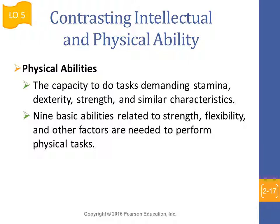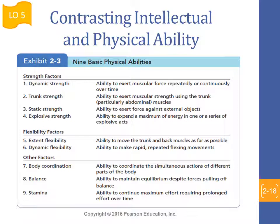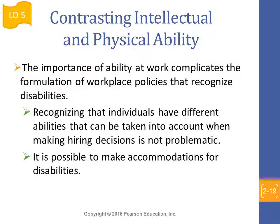When we talk about physical abilities, we are looking into physical attributes: strength, stamina, and flexibility of the human body, which are very important for certain tasks. Exhibit 2.3 in the book talks about the different strength factors and flexibility factors — dynamic strength, trunk strength, body coordination, balance, and stamina. These are also related to certain tasks and jobs. Similar to intellectual abilities, human resources and managers need to look into what kind of physical abilities are needed for the jobs at hand.